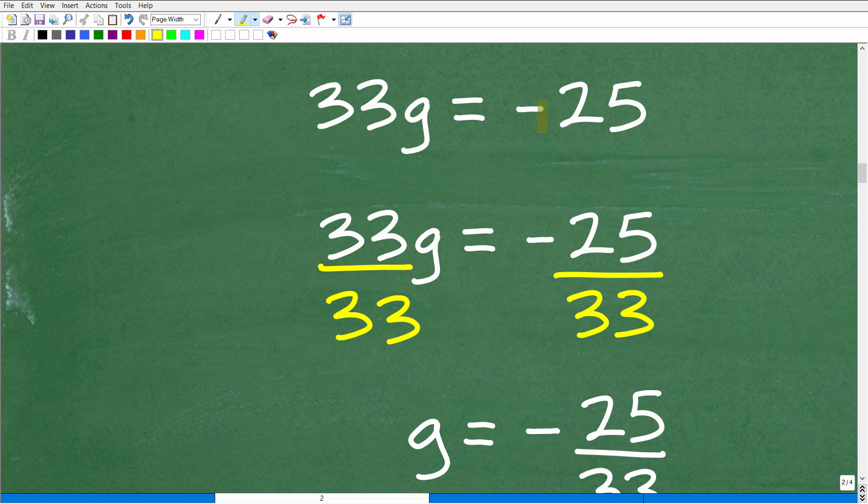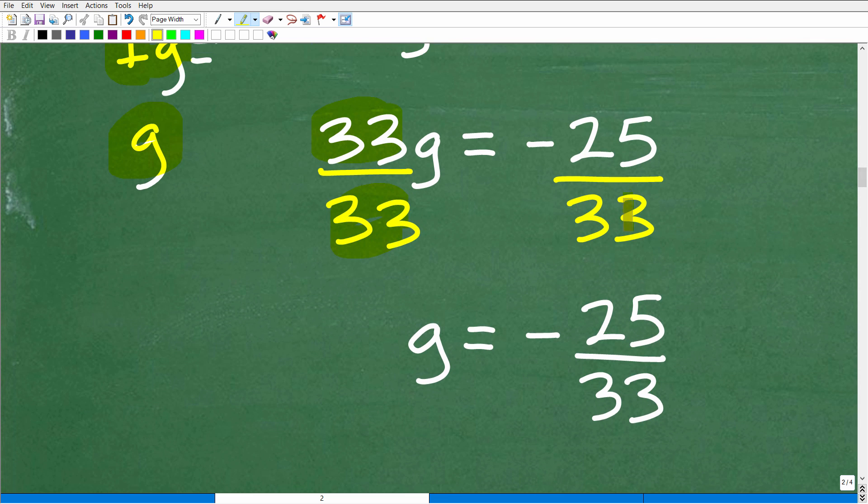All right, so here we have 33g is equal to negative 25. So how do we solve for g? Well, we want 1g. 1g is the solution. 1g is the same thing as g. So how can I get a 1g? Well, I have 33 times g. If I divide both sides of the equation by 33, 33 divided by 33 is 1, or 1g, or I could just write that as g. So that's what I need to do. Again, notice I'm doing the same thing to both sides of the equation. In this case, I'm dividing both sides by 33. So 33 divided by 33 is g or 1g. And then of course we have negative 25 over 33. So that is the final answer.